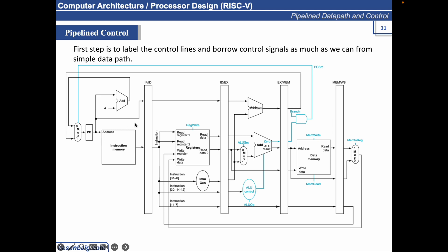We need only set the control values during each pipeline stage. During the instruction fetch phase, the control signal to read instruction memory and to write the PC are always asserted, so there is nothing special to control in this stage. Once the instruction reaches the instruction decode and register file read stage, the two source registers are always in the same location in the RISC-V instruction format, so there is nothing special to control in this pipeline stage either.